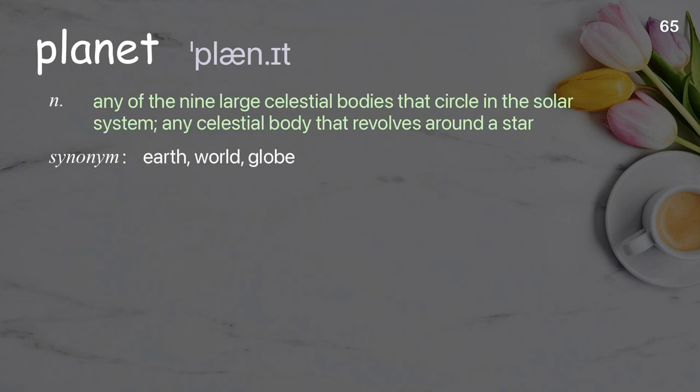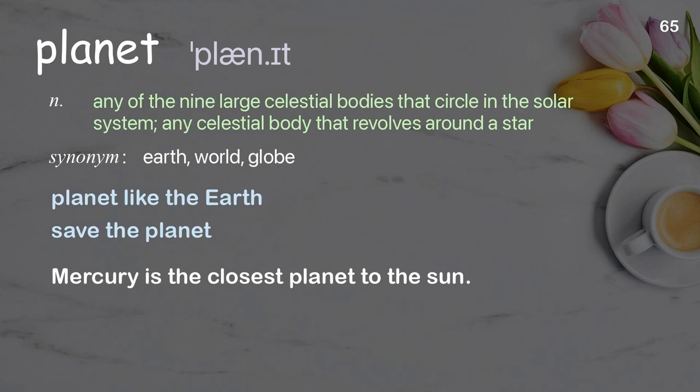Planet: any of the nine large celestial bodies that circle in the solar system; any celestial body that revolves around a star. Examples: planet like the earth, save the planet. Mercury is the closest planet to the sun.